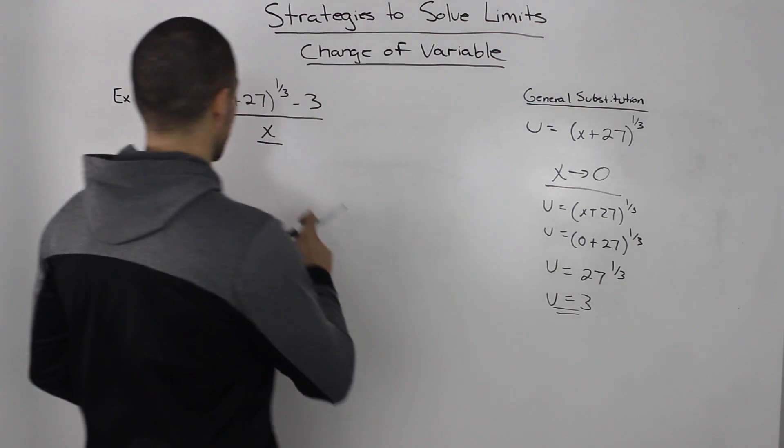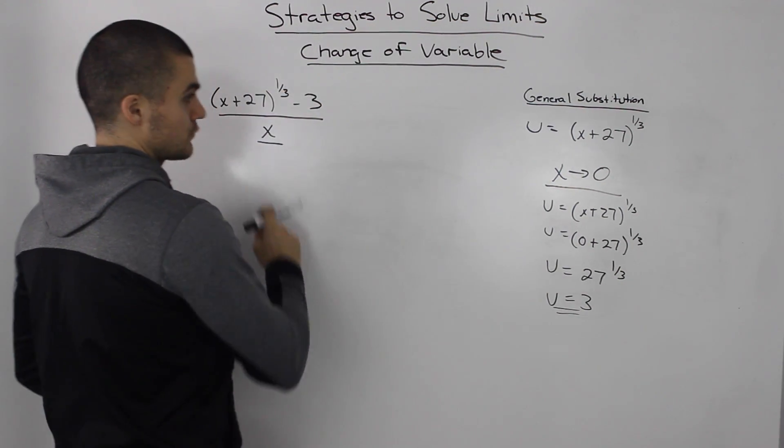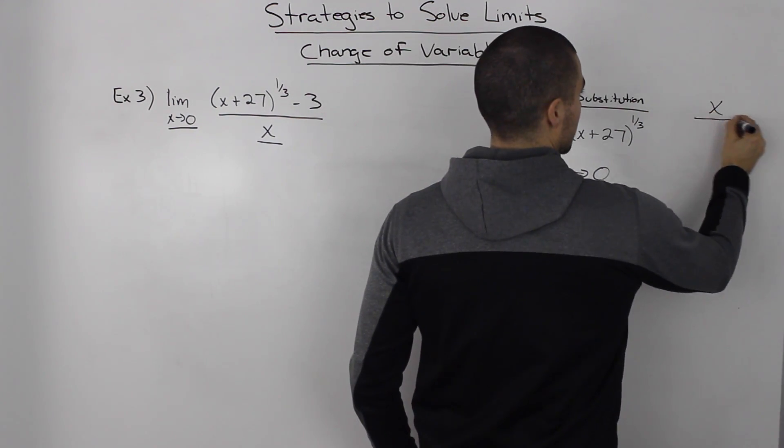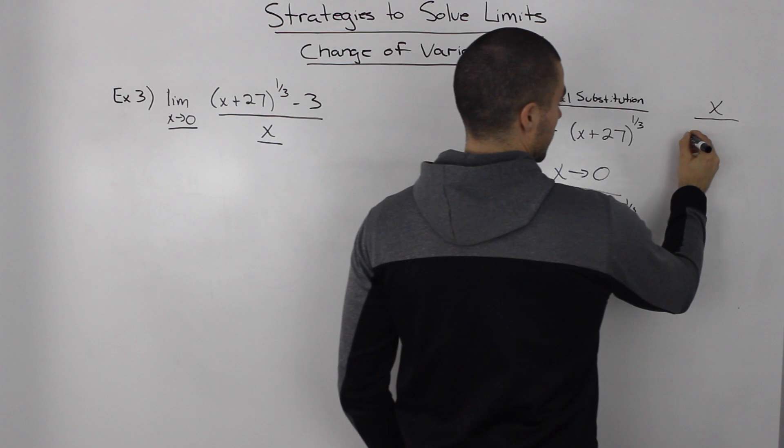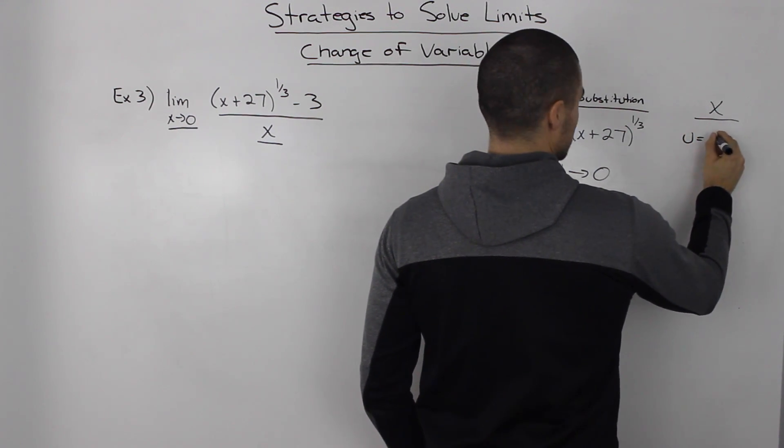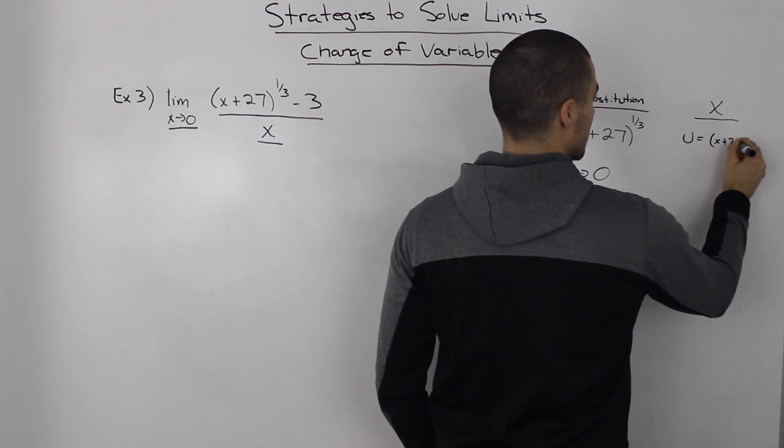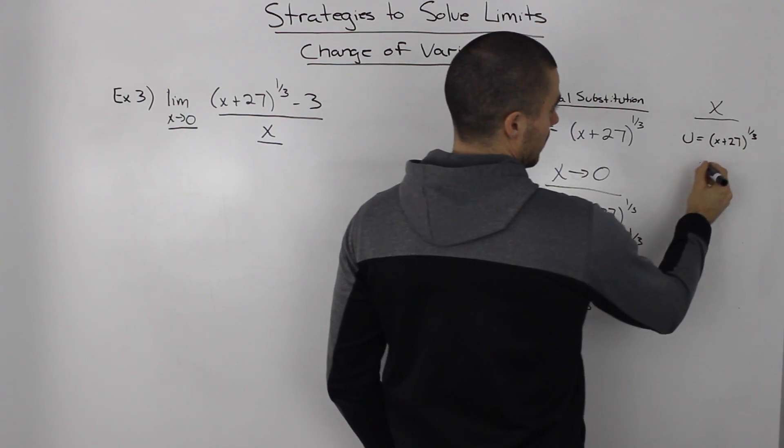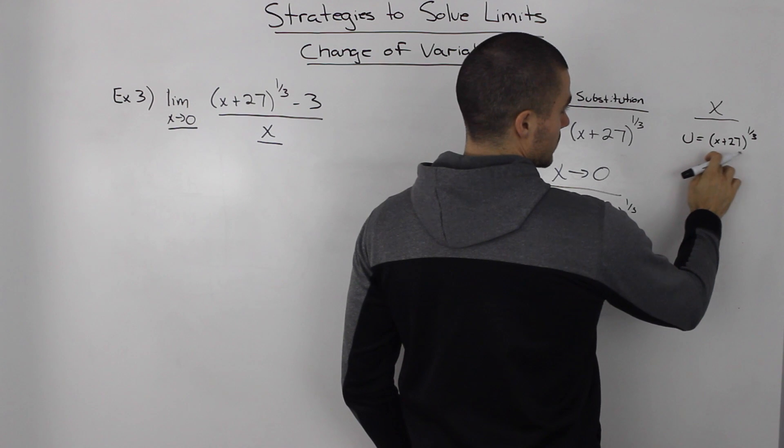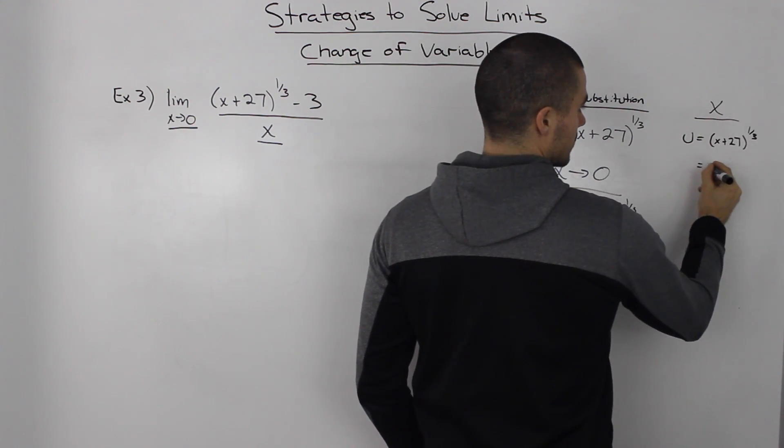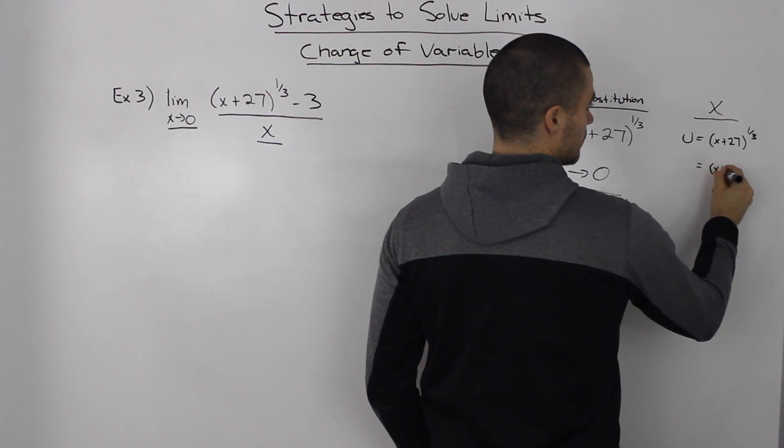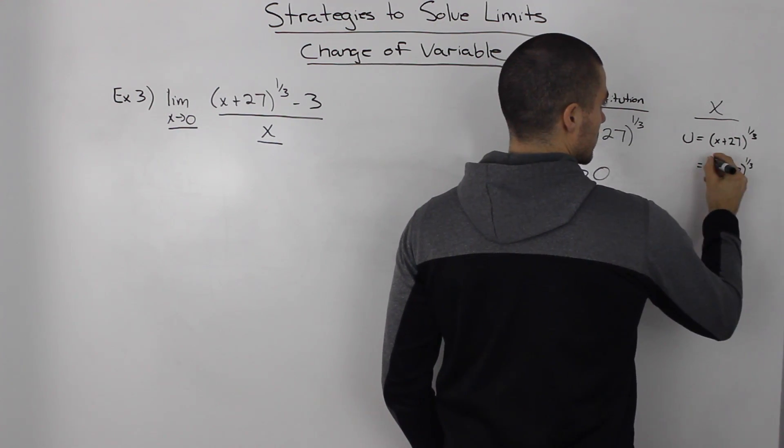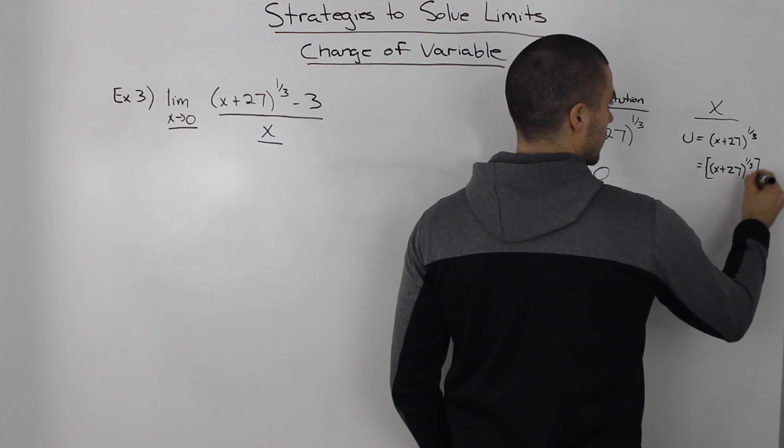Now we need to substitute for x. We write out our general substitution again, u = (x+27)^(1/3). To get rid of this 1/3 exponent, we're going to take both sides to the power of 3.